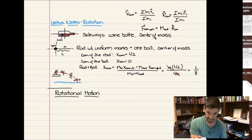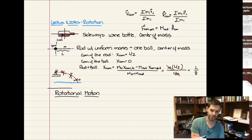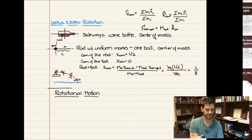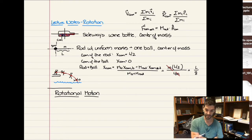L over 8 is closer to zero than L over 2. The center of mass is shifted toward where all the mass is — in this case, a lot of the mass is in the ball at the end. So the center of mass is located closer to the ball.